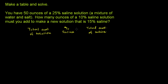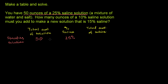Let's list it for each solution. We're starting with 50 ounces of a 25% saline solution — this is our starting solution. We have 50 ounces of it, and it is 25% saline. To figure out the total ounces of saline, we multiply 50 by 25%, which is the same as 50 divided by 4, giving us 12.5 ounces of saline in this 50-ounce solution.